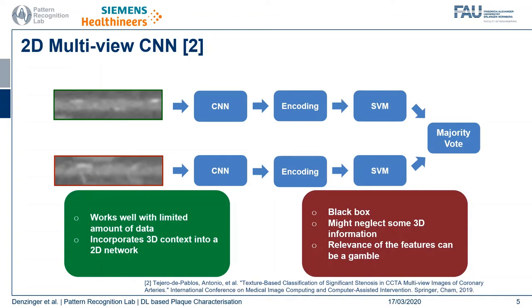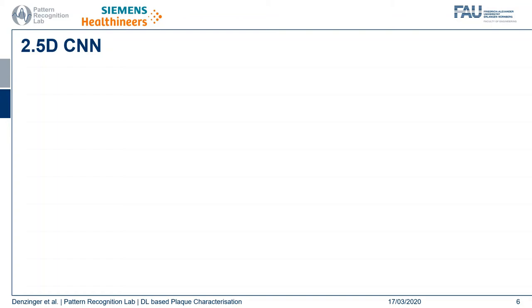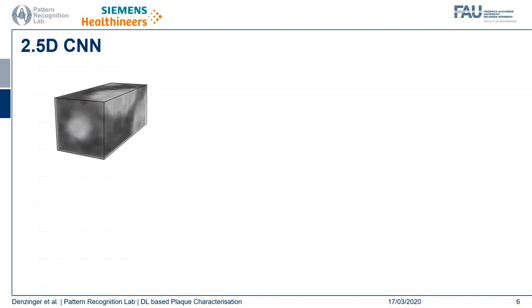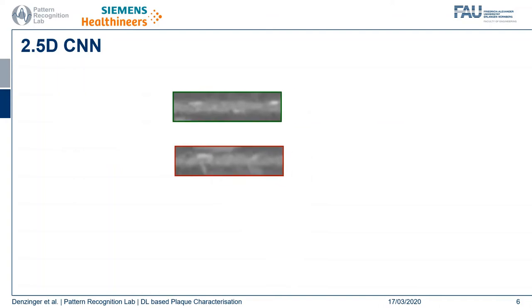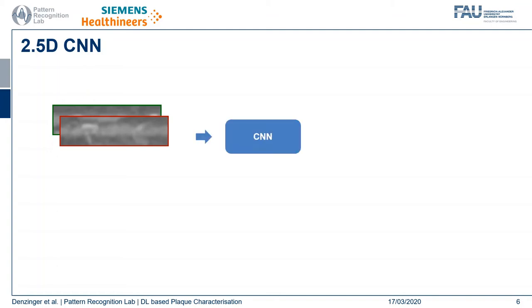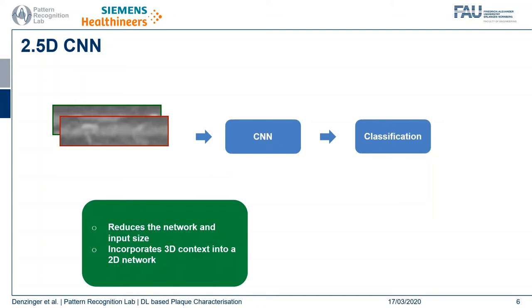Both of the aforementioned approaches were originally used to not only characterize lesions but also detect them. The third approach we want to present is a 2.5D convolutional neural network that we propose in this work. We again start with the volume stack and take the central slices, but instead of having distinct convolutional neural networks for each single slice, we combine them and plug them into a single simple 2D CNN and classify. By this we significantly reduce the network and the input size contrary to the RCNN approach and again incorporate the 3D context into a 2D network.